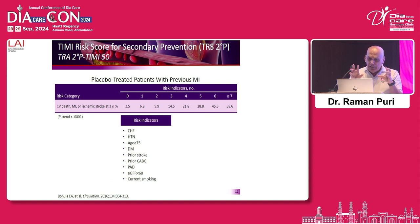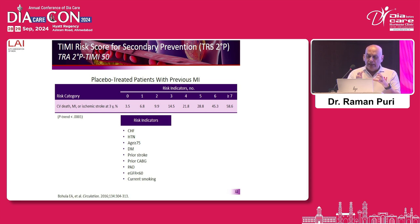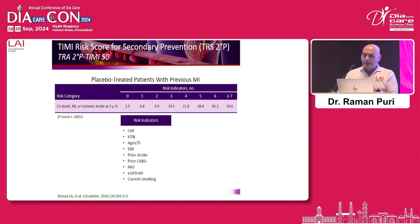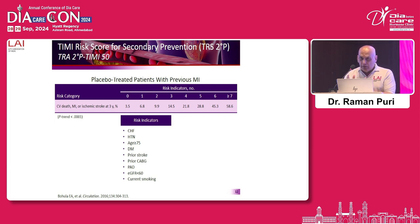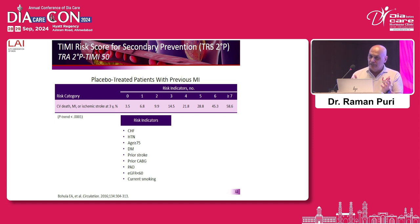There is a very important trial — the TRP secondary prevention TMI-50 trial — where it was seen that in patients with coronary artery disease, when none of the nine risk indicators (including heart failure, hypertension, age more than 75) was present, only 3.5% of patients had recurrent cardiovascular events in three years. When the number of risk indicators was increased from one to two to three to more than seven, at more than seven indicators, 58.6% of patients had events. Imagine — from 3.5% to 58.6% — meaning coronary artery disease is not a homogeneous group.